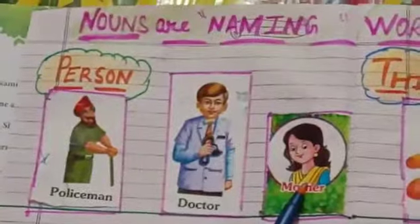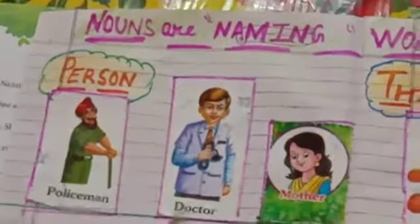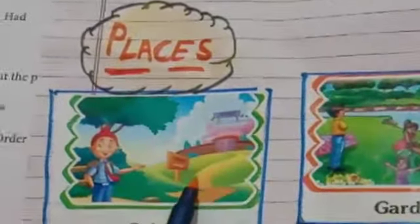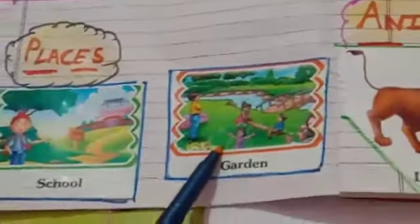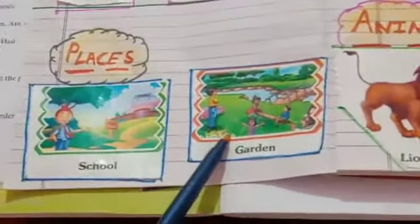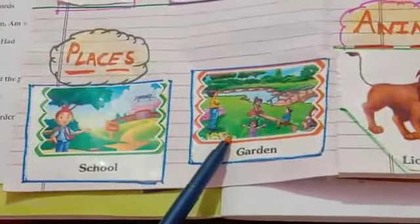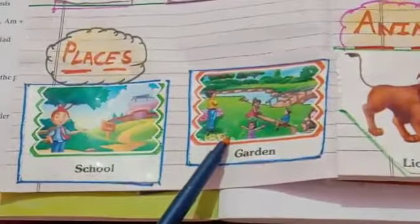Name of persons are also called naming words. Names of places like school, garden, zoo, playground — these are the places. Names of places are also called naming words.